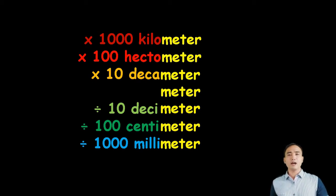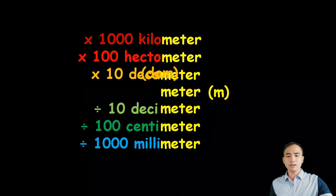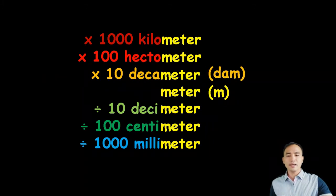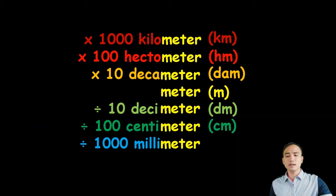Let us find out their abbreviations. For the meter, it is represented by small letter m. For decameter: dam. Hectometer: hm. Kilometer: km. Decimeter: dm. Centimeter: cm. Millimeter: mm.